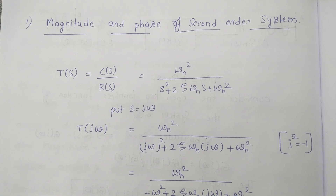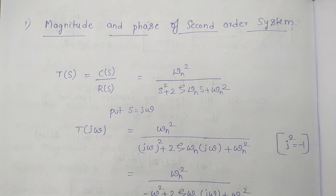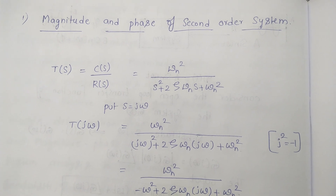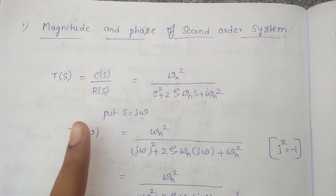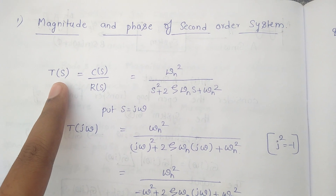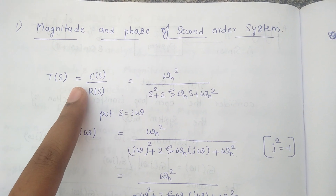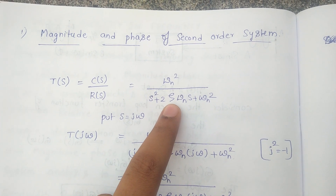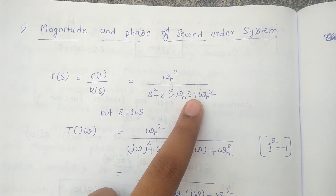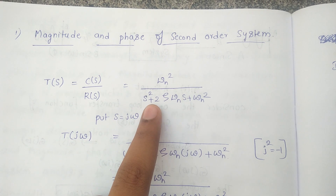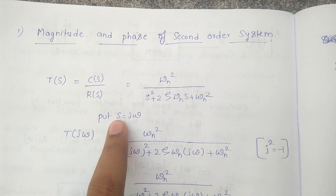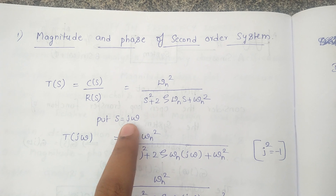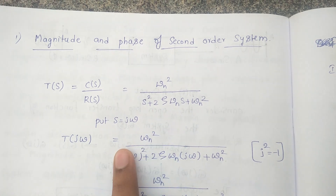This is frequency domain specification. We want to find the magnitude and phase of a second-order system. Consider the transfer function of a second-order system: ωn² / (s² + 2ζωn·s + ωn²). As we are using sinusoidal input for frequency response, substitute s = jω.